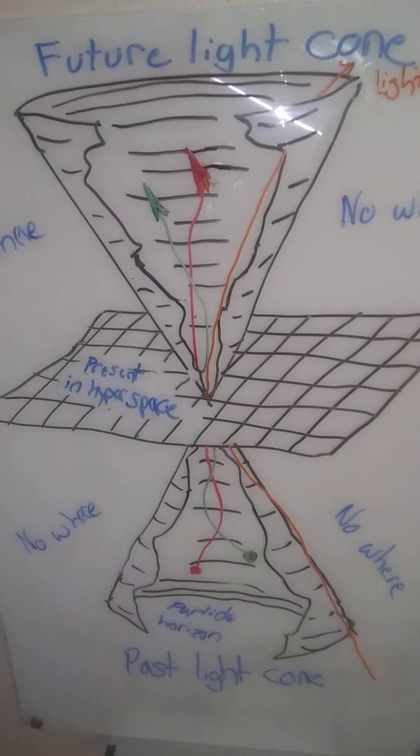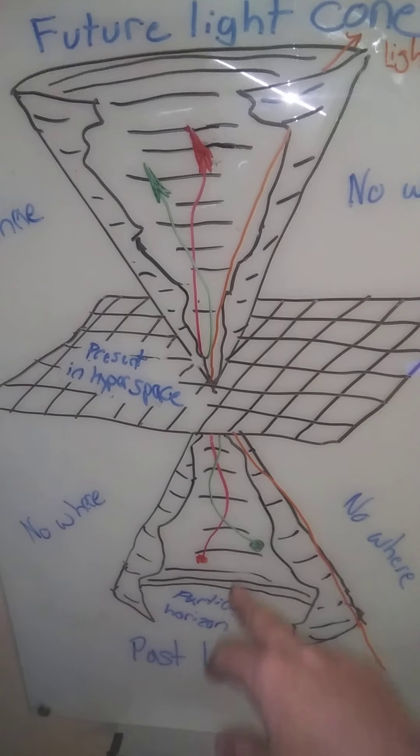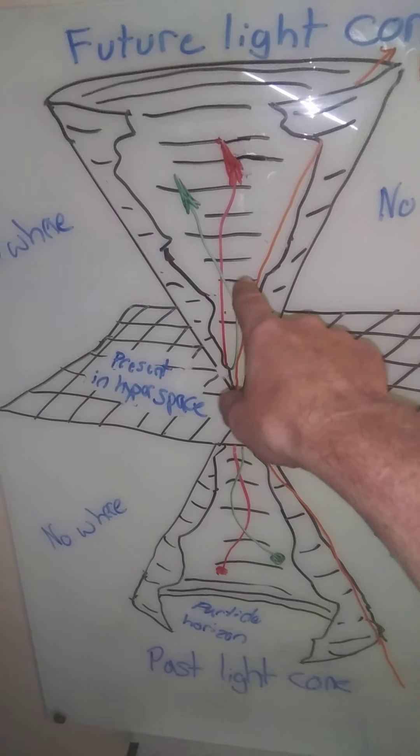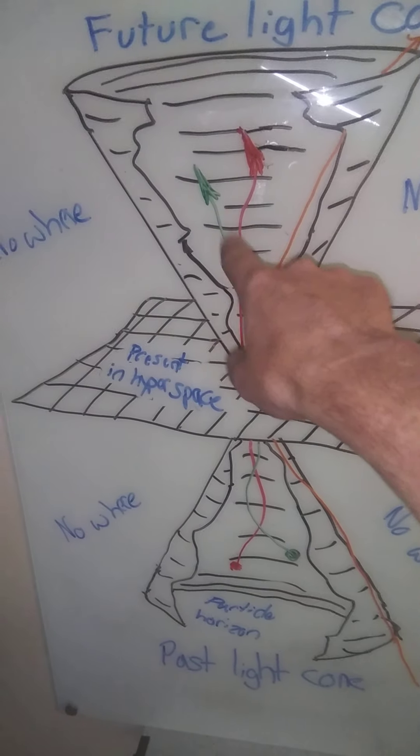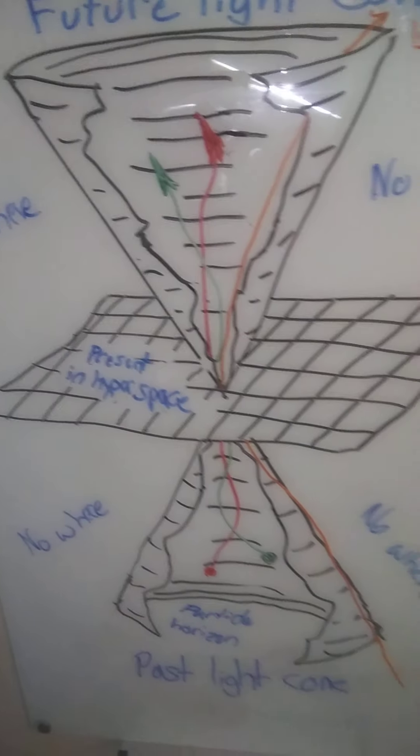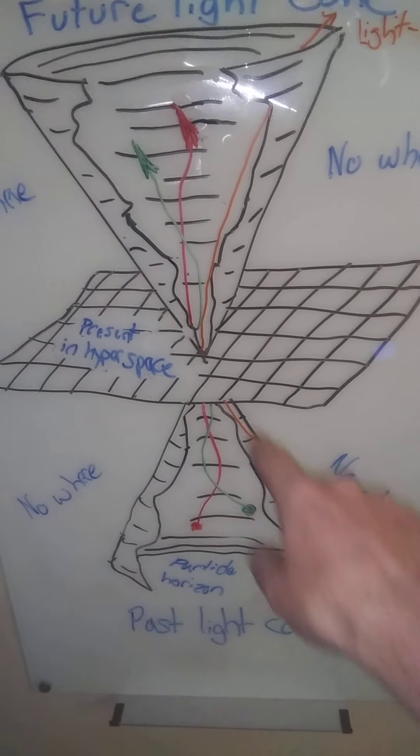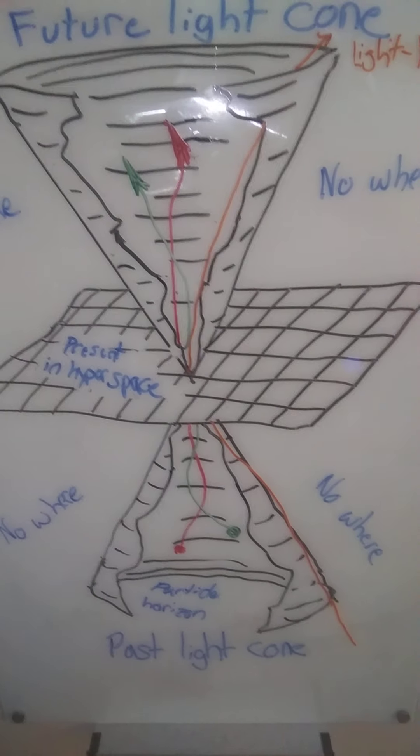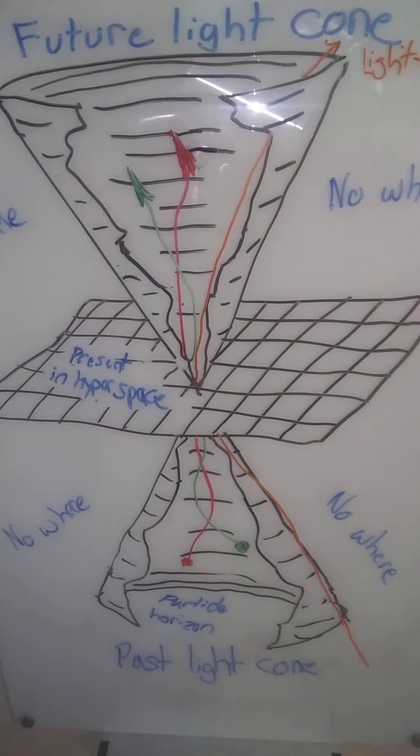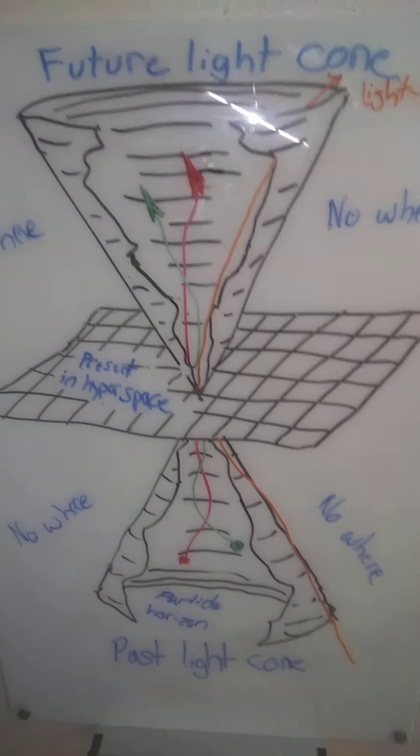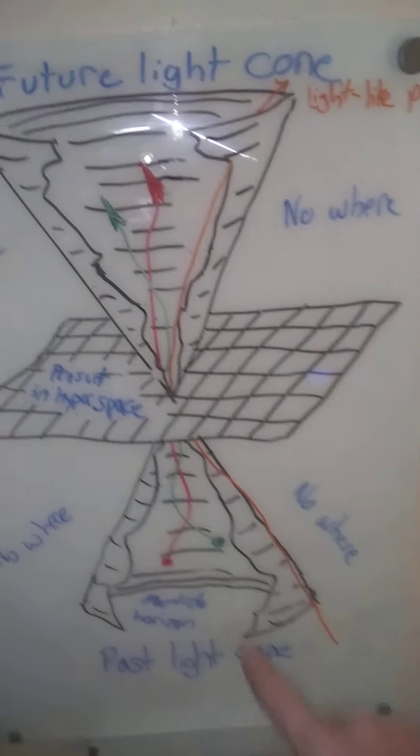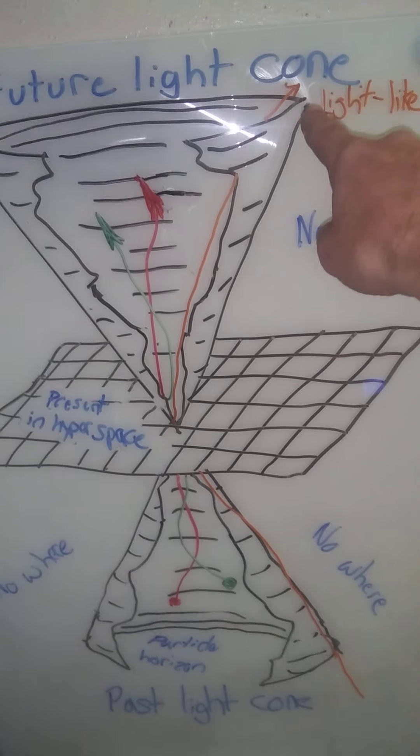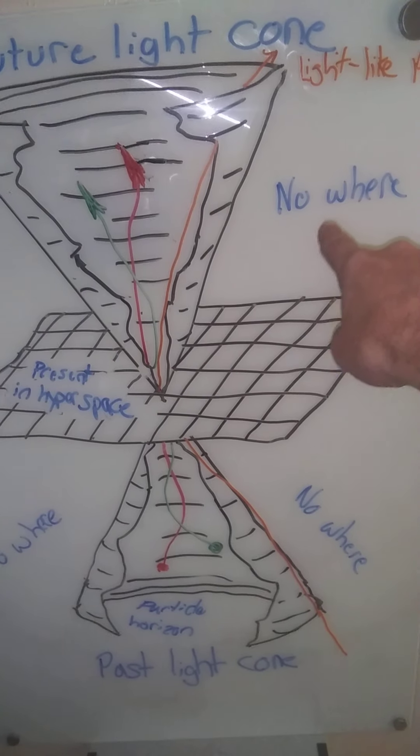Two different particles cannot actually enter into each other's world-line. They couldn't do it in the past, the present, or the future. So there's two barriers to consider in the light cone: the light barrier that approaches nowhere.